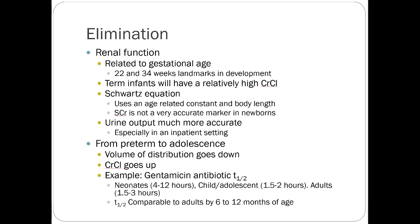From preterm to adolescence, volume of distribution goes down and creatinine clearance goes up. For example, gentamicin's half-life in neonates can range really variably — more premature kids closer to 12 hours, more full-term closer to 4 hours. In children and adolescents it drops substantially, approaching adult values. This highlights the differences and trends across age groups.